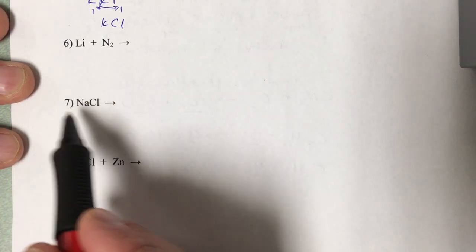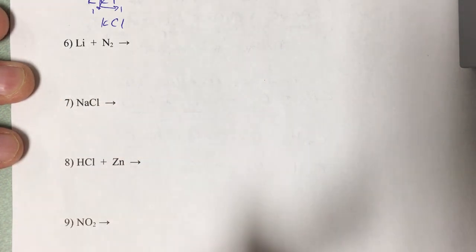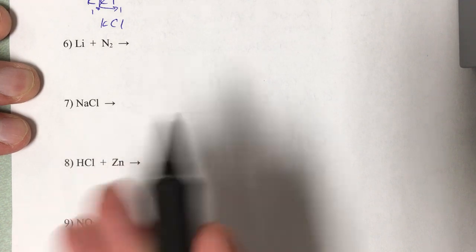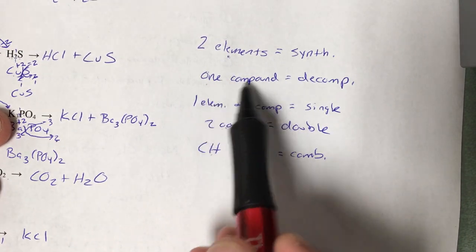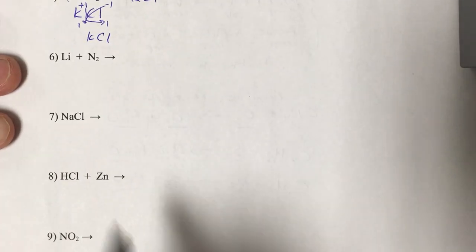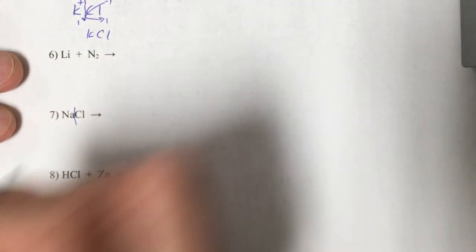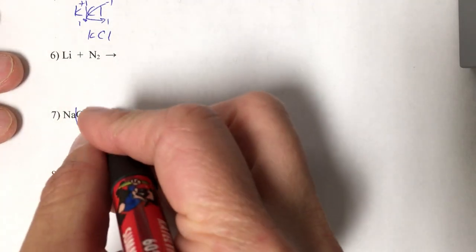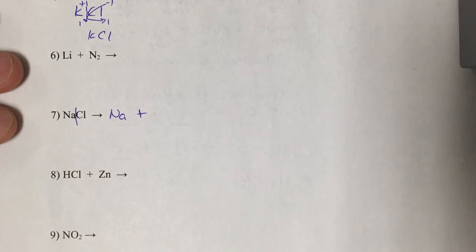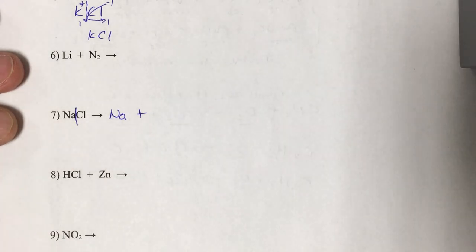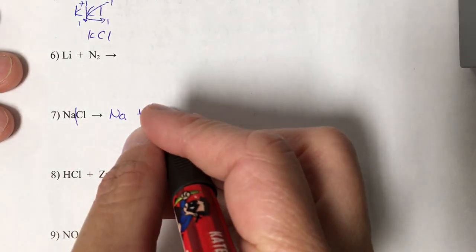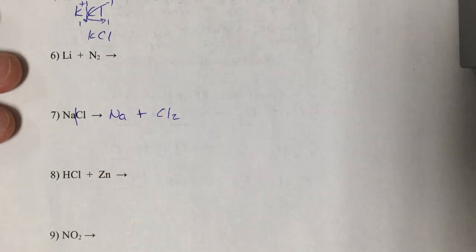I only have one reactant here. One reactant is the key giveaway of a decomposition reaction. If you only have one compound given to you, it's a decomposition reaction. In most of these, all we're going to do is split this up into its two elements. So it splits right down the middle. Sodium is the first element — just Na. Chlorine is the second element, and it's one of those diatomics, so because it's diatomic you have to put the 2 on it — Cl2.